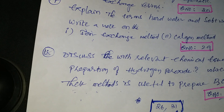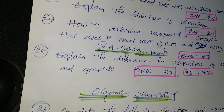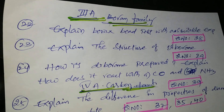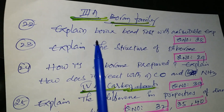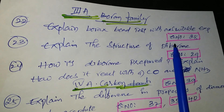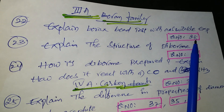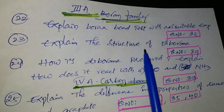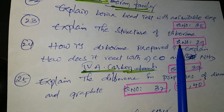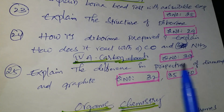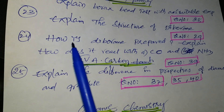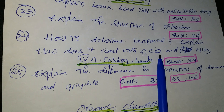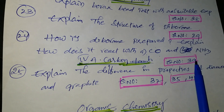Next: P-block elements. First lesson — 3A group (boron family). Main important question: explain the borax bead test with a suitable example — question number 28. Next: explain the structure of diborane — question number 29. Next: how is diborane prepared? Explain how it reacts with carbon monoxide and ammonia — question number 39.